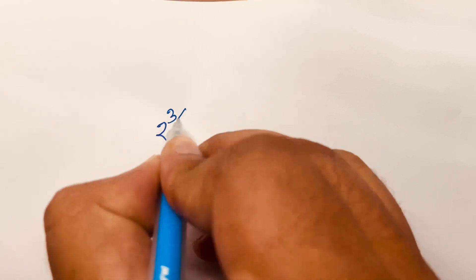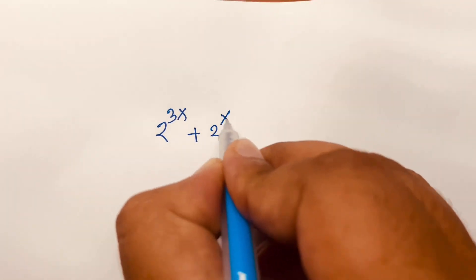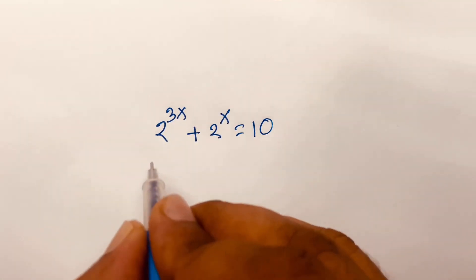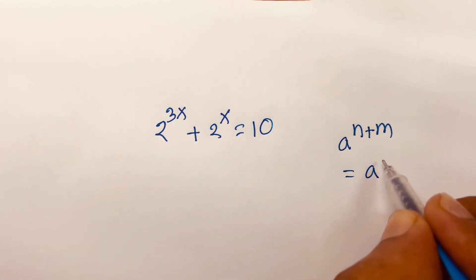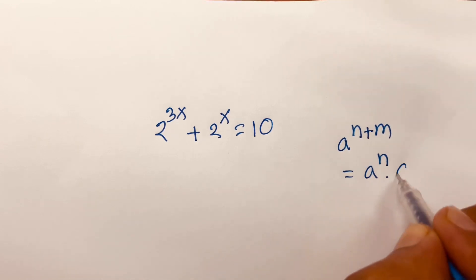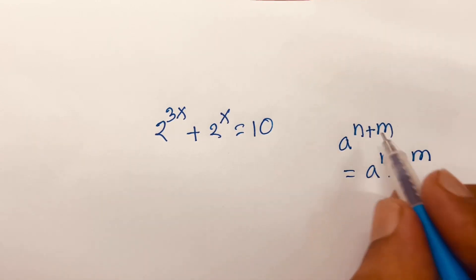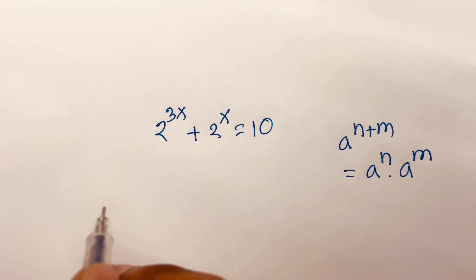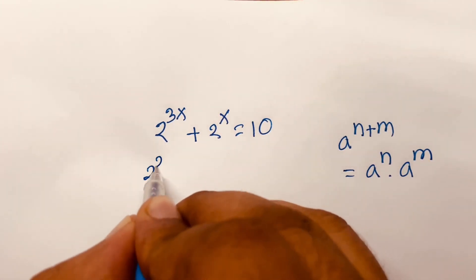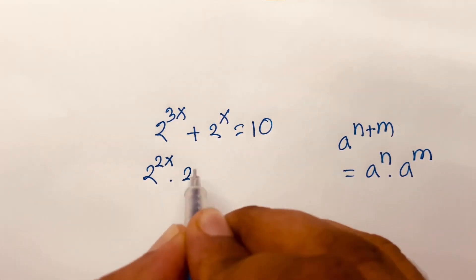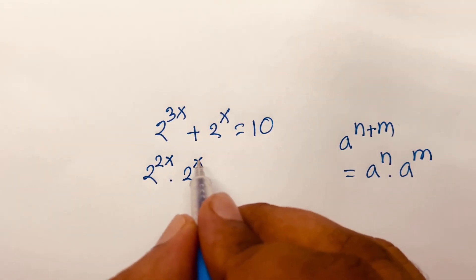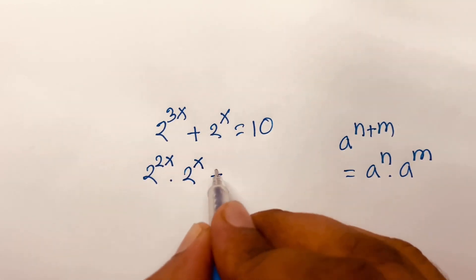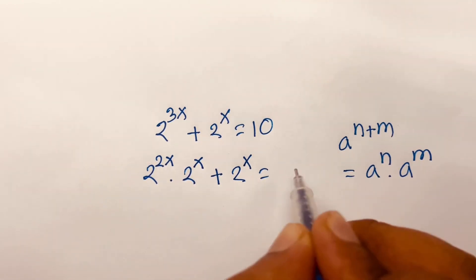Now I will solve this question by another method. The equation is 2 to the power 3x plus 2 to the power x equals 10. We know the rule a to the power n plus m equals a to the power n times a to the power m. Following this rule, 2 to the power 3x becomes 2 to the power 2x times 2 to the power x. Here the base is the same, so the powers add to give 3x. Plus 2 to the power x equals 10.